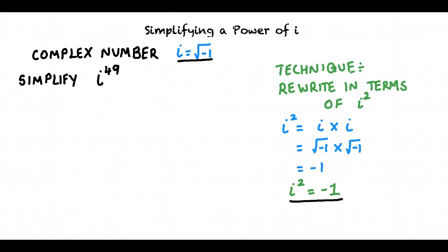Let us take another example. Let us say we are required to simplify the expression i raised to the power 49. The power of i is 49, which is not a multiple of 2. 49 is not a multiple of 2, so we can make slight changes to 49. We can write 49 as 48 plus 1. Thus, i to the power 49 equals i to the power 48 plus 1.